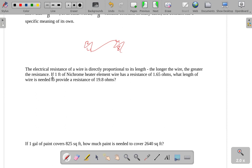If we have one foot of nichrome heater element and it has a resistance of 1.65 ohms, what length of wire would be needed to provide a resistance of 19.8 ohms? So you're creating a heater, and you want it to have a specific resistance, because you want it to put off a certain amount of heat and not draw too much current.